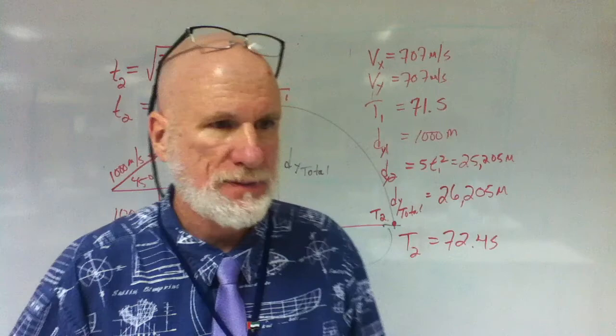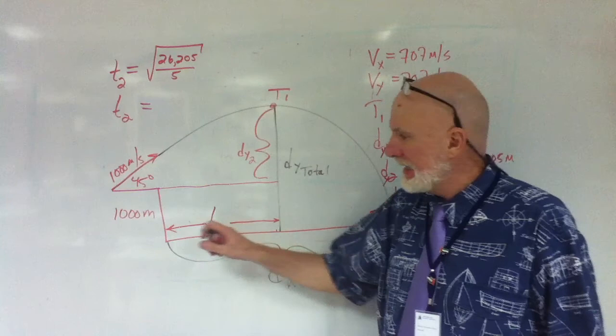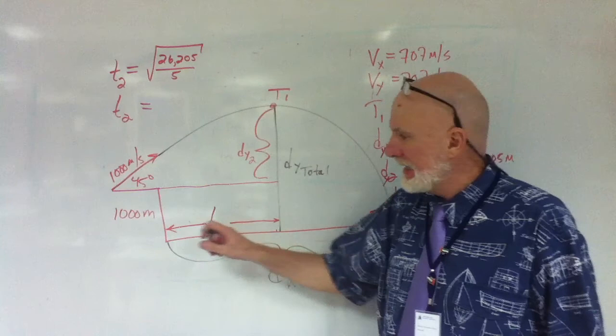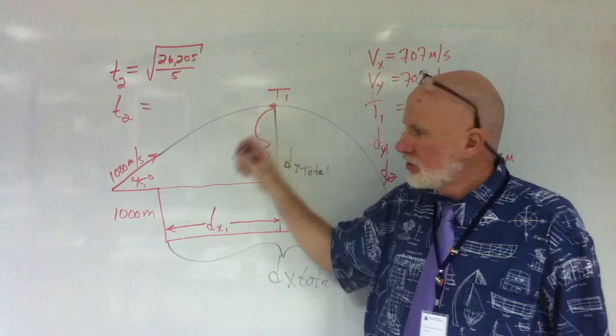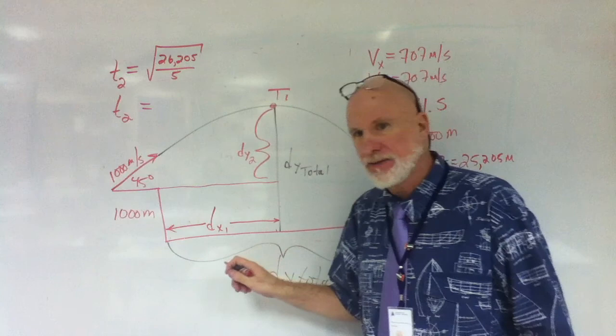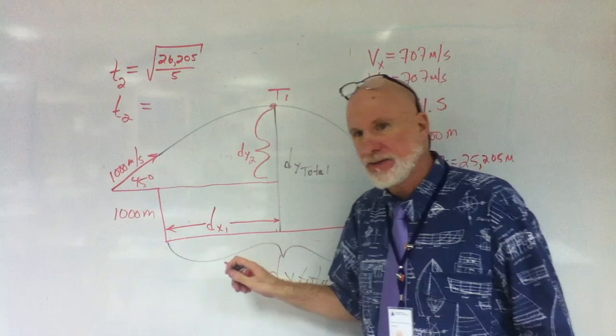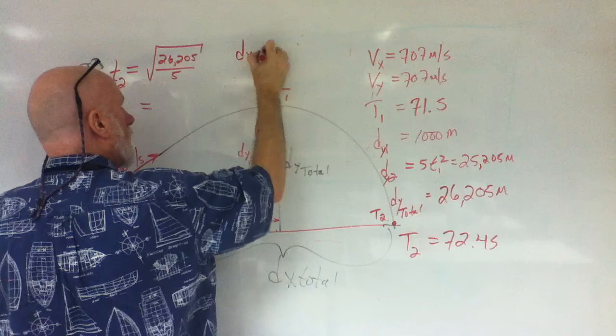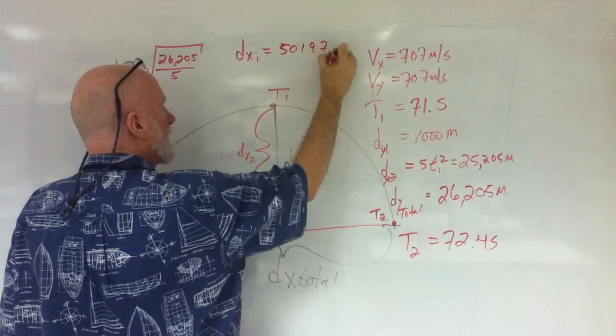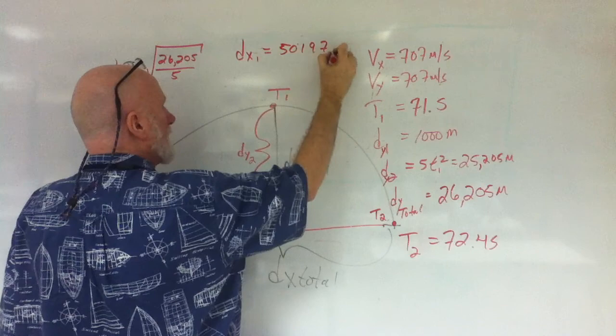So, what's dx1 going to be? Isn't it going to be the time it takes to go from here to here? And isn't it at the same time that is t1? So, wouldn't this be 707 vx times t1? Isn't that correct? So, what is dx1 equals vx times t1, which is what? 50,197. 50,197. Is that what you said? Yeah. Is that correct? Yes. You're sure? Yes.